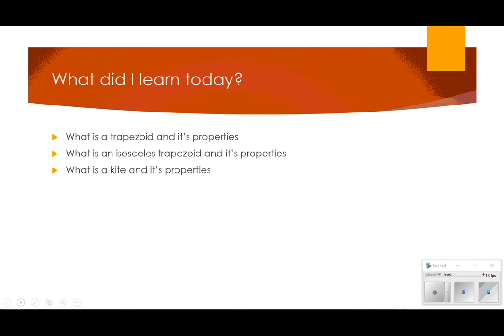So what did you learn today? Hopefully you learned that a trapezoid is a quadrilateral with one pair of parallel sides, that an isosceles trapezoid has congruent legs, congruent diagonals, and a mid-segment just like isosceles triangles. Lastly, we learned about a kite and all of its properties. You guys have a great evening, morning, day — whenever you're listening to this.